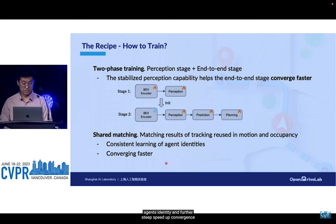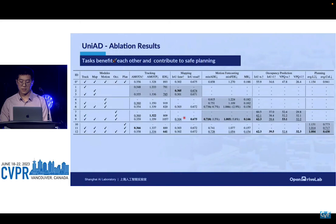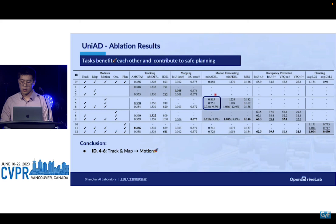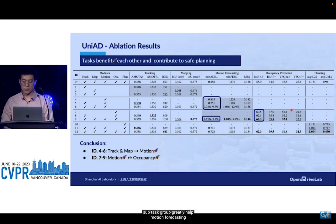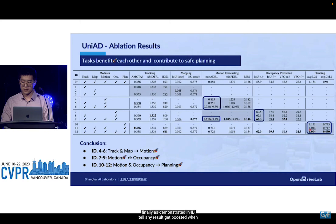Now let me share a bit more about our experiments. We did extensive ablations to validate the necessity of preceding tasks and found that tasks benefit each other and final planning. Comparing rows 4 to 6, we conclude that two perception subtasks greatly help motion forecasting. As shown in rows 7 to 9, performance of both motion and occupancy prediction improves when jointly optimized. Finally, as demonstrated in rows 10 to 12, planning results get boosted when equipped with all prior tasks.